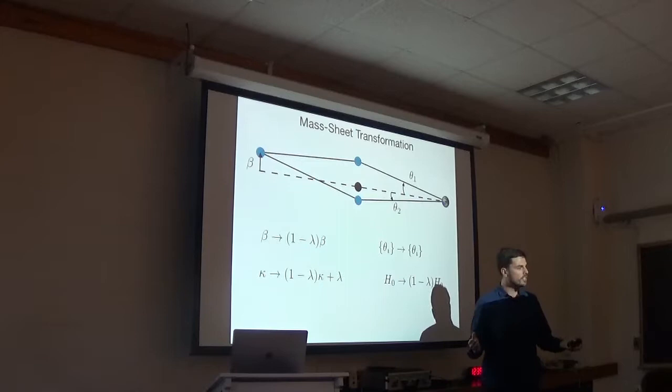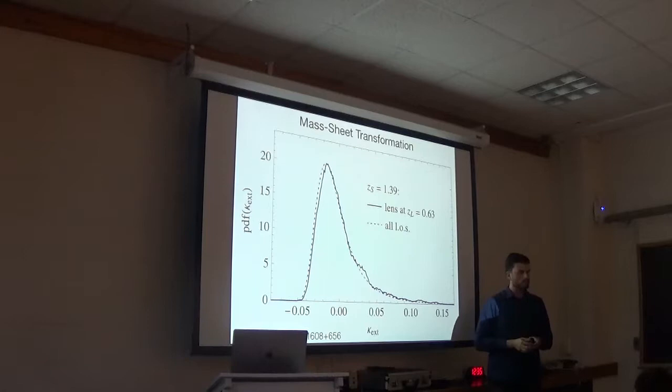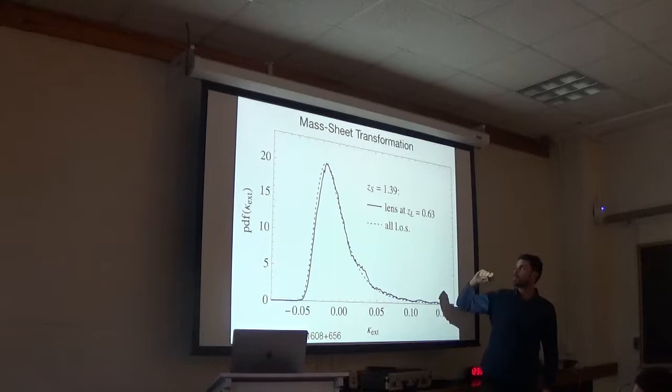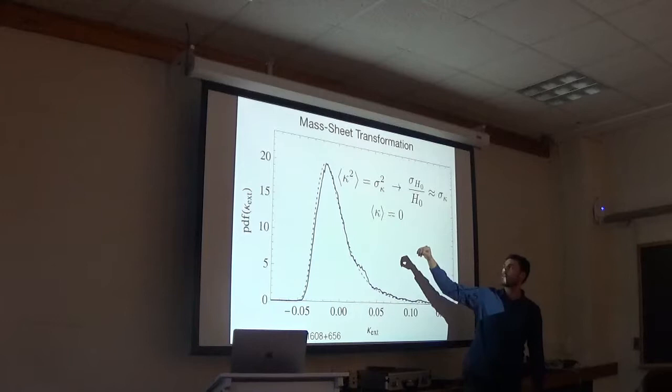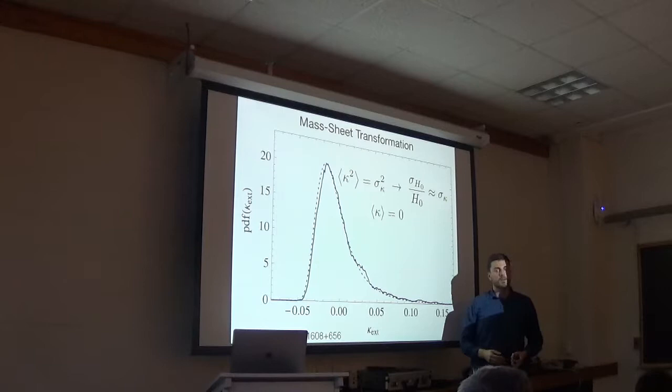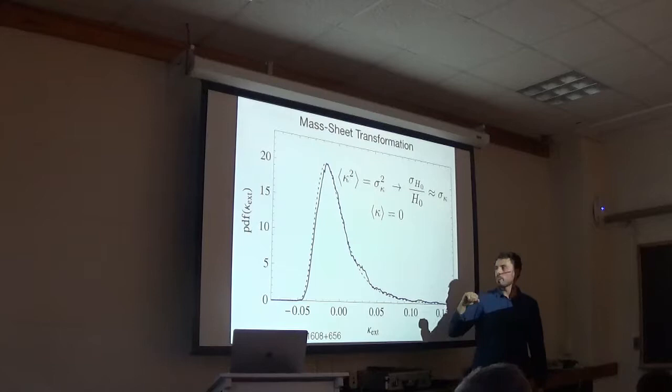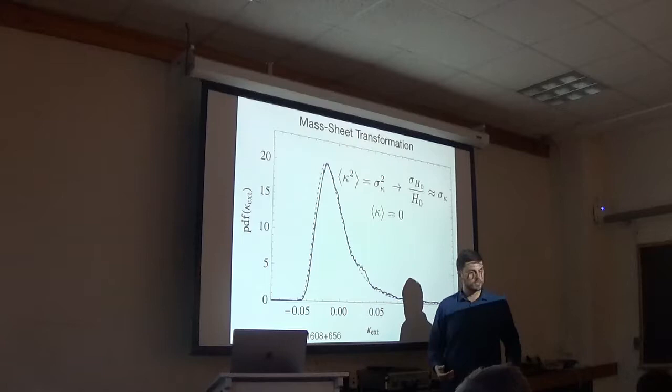This is not just a theoretical curiosity. The mass along the line of sight causes convergence and divergence of light rays, which causes an external convergence of the measured lens. This is an example from one of the systems. You see this is a very wide PDF for this external convergence. And in fact, the width of this PDF is one of the main limiting factors of contemporary measurements of H0.